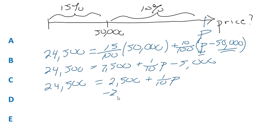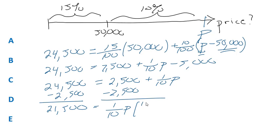Subtract the 2,500 from both sides. On the right, we have one-tenth of P. On the left, we have 21,500. Multiply both sides by 10. 10 over one. Multiply both sides by 10. And on the left, you have what? 215,000 equals the price.